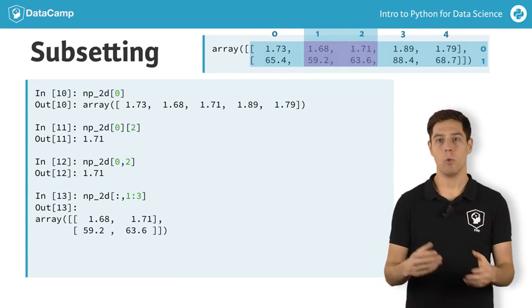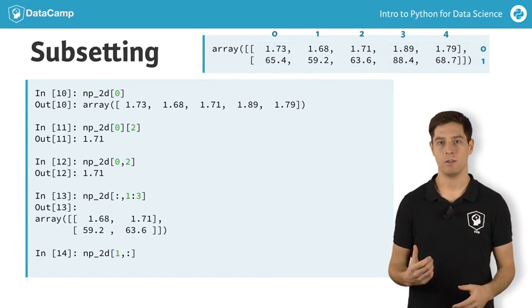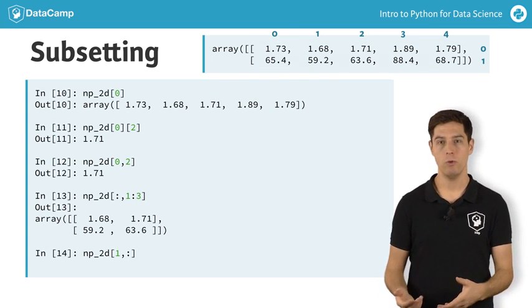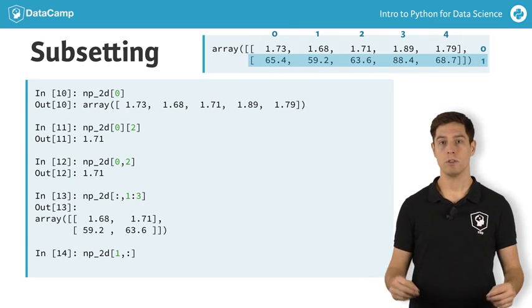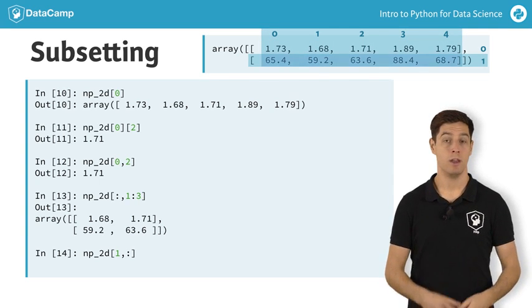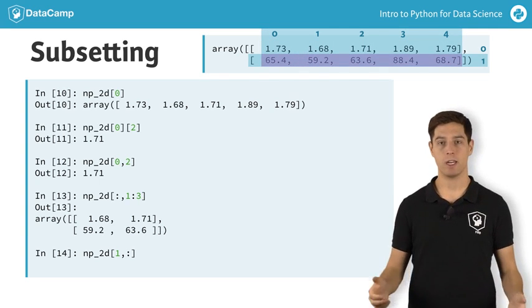Similarly, you can select the weight of all family members like this. You only want a second row, so put 1 before the comma. You want all columns, so you use a colon after the comma. The intersection gives us the entire second row.